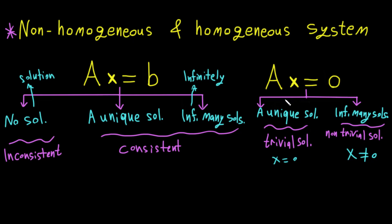Remember that the homogeneous system has only two possible solutions: either a unique solution or infinitely many solutions. The non-homogeneous system, which has a vector B, can have no solution, a unique solution, or infinitely many solutions — three possibilities. This distinction is important and we will discuss the homogeneous system further. Thank you.